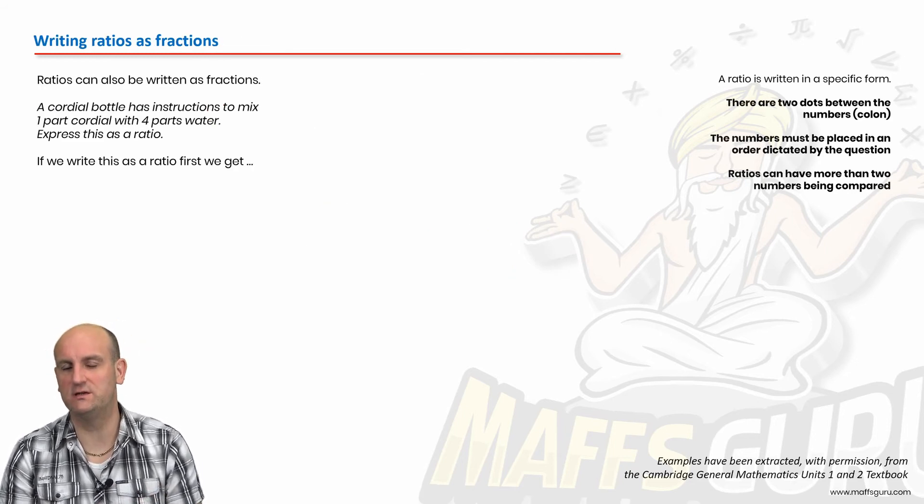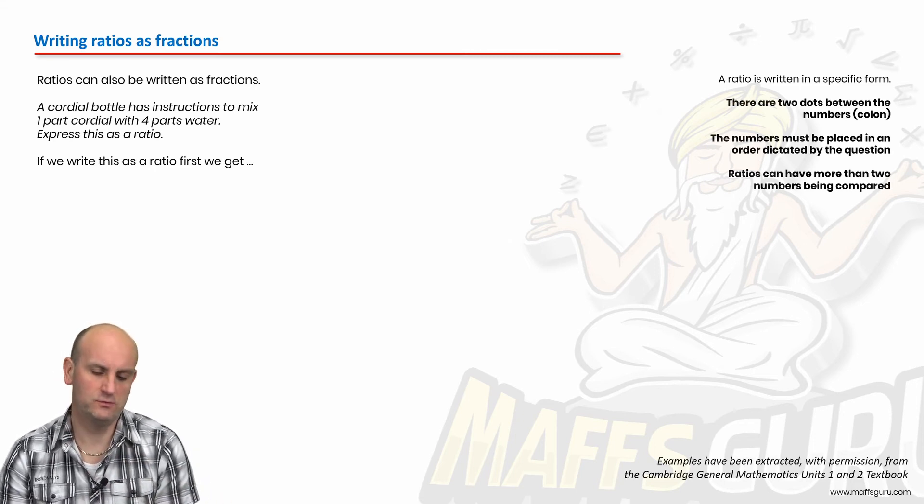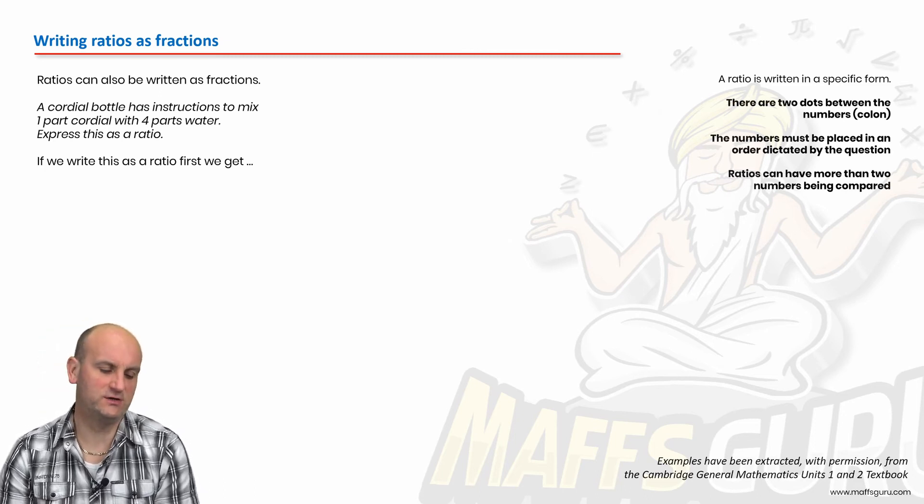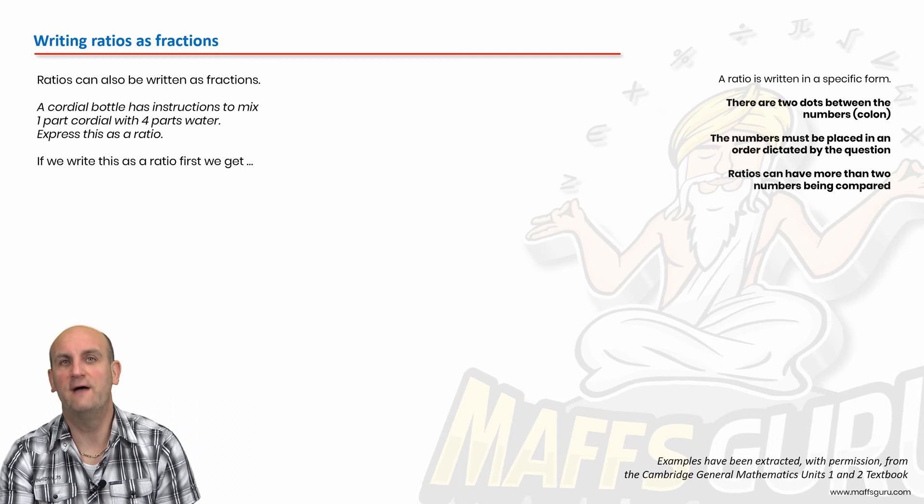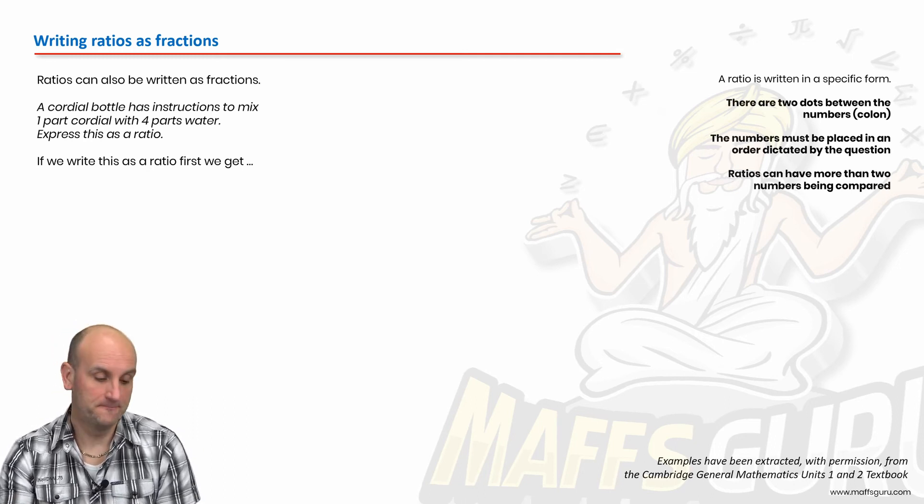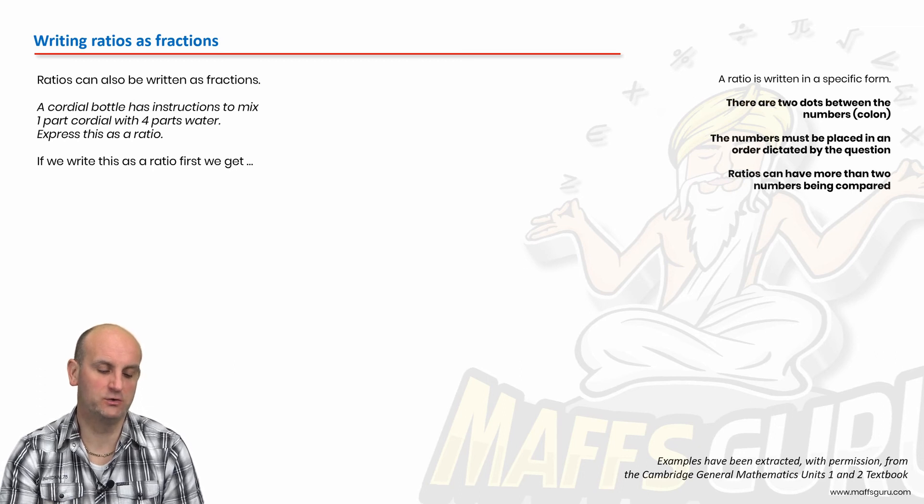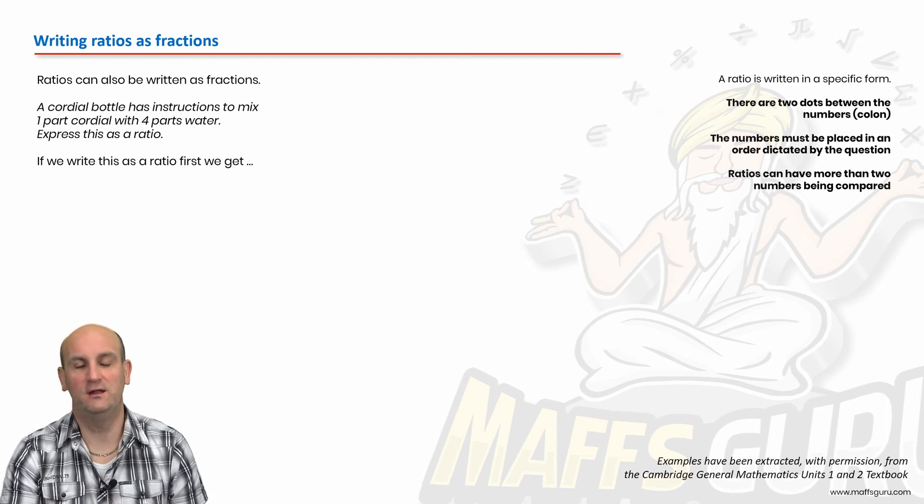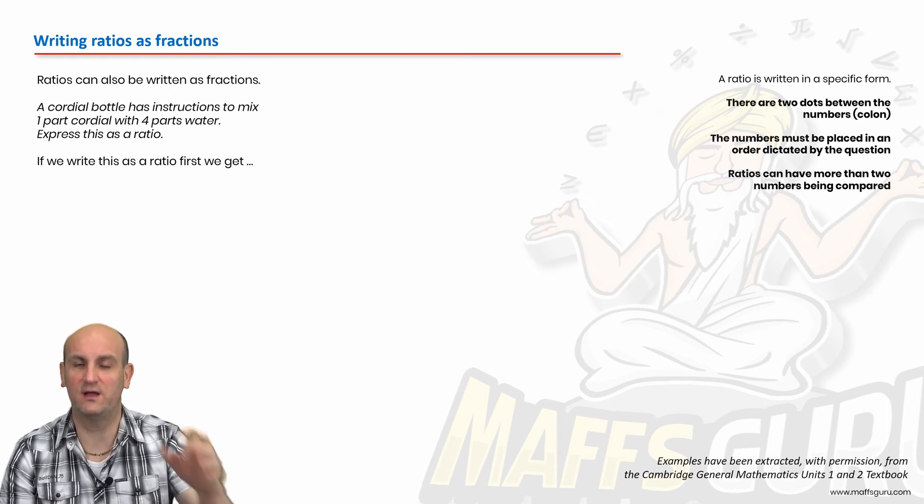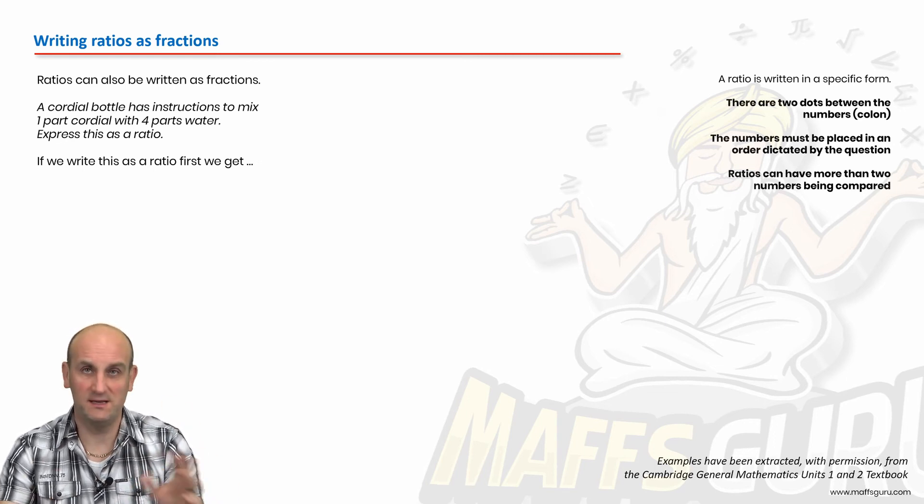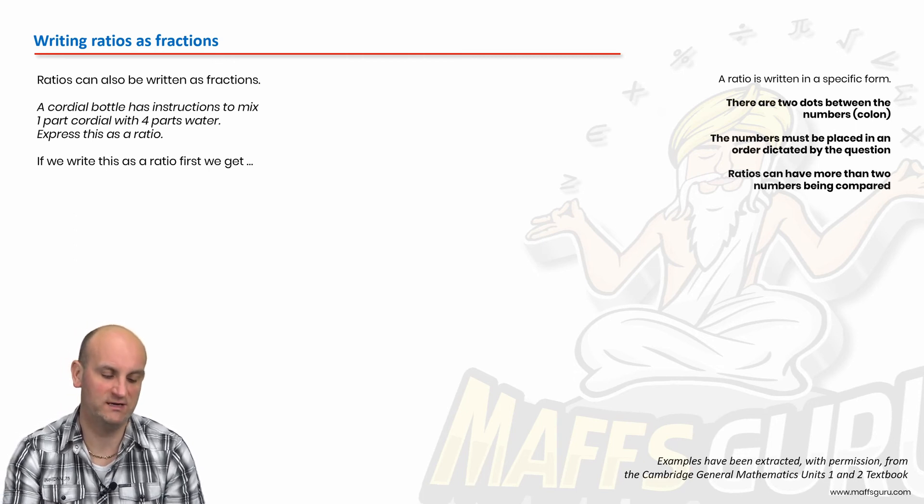Now we can write ratios as fractions. And I slightly disagree with the book here, with the essentials or the Cambridge general maths textbook. So I'm going to show you the way I would do it. This is what makes sense in my head. Ratios can be written as fractions. A cordial bottle. Are you aware that in America they don't sell cordial? Nowhere in the world could I walk around and find some lemon squash or some orange squash. Anyway, a cordial bottle has instructions to mix one part cordial with four parts water.